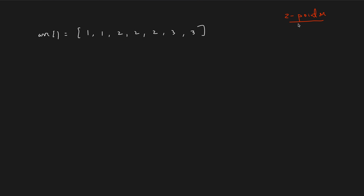So the optimal approach is to use the two-pointer approach. Initially, we keep pointer i at index 0 and pointer j at index 1. We see that i and j have the same value, so they're not different. I need someone different than 1, so I move the j pointer one step ahead. At this point, the value at index i and the value at index j are different. So I move the i pointer one step ahead and then place the value of j there by doing A[i] = A[j].